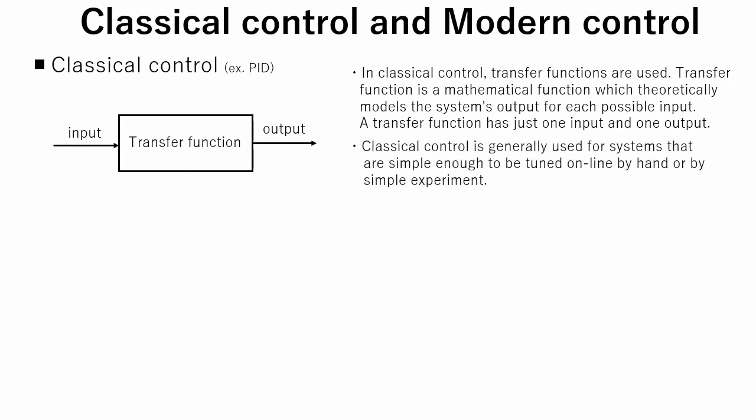Classical control is generally used for systems that are simple enough to be tuned online by hand or by simple experiment. So it is difficult to implement it for multivariable cases such as airplane control systems.